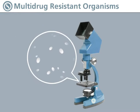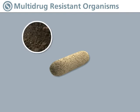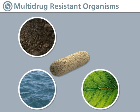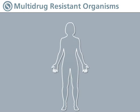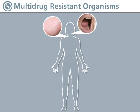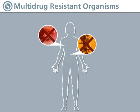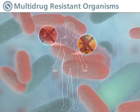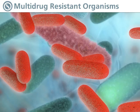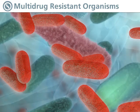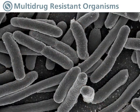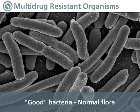Bacteria are living single-cell organisms that can only be seen with a microscope. They live in the soil, water, and on plants and animals. In humans, many different types of bacteria are normally present all over our body, such as on our skin, inside our mouth, stomach, and intestine, but not in the blood or spinal fluid. Much of the time these bacteria are perfectly harmless and coexist peacefully with surrounding organisms — these are called normal flora.